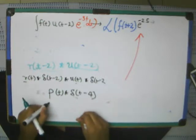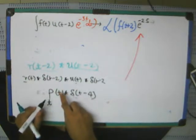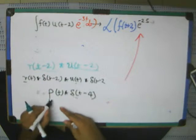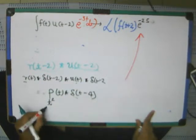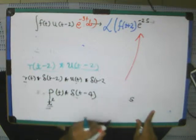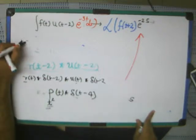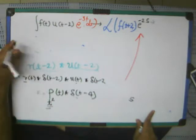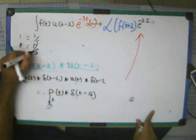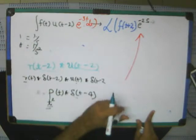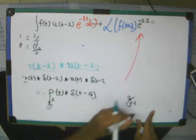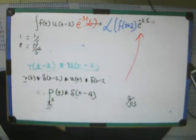And the parabola of t is nothing but, sorry, this is nothing but t square. And for t square the Laplace transform is nothing but, for t it is, what is, for 1 it is 1 by s. For t it is 1 by s square. So, 2 by s cube. So, 2 by s cube is the answer. Simple as that. Okay. So, you can just simplify the things.